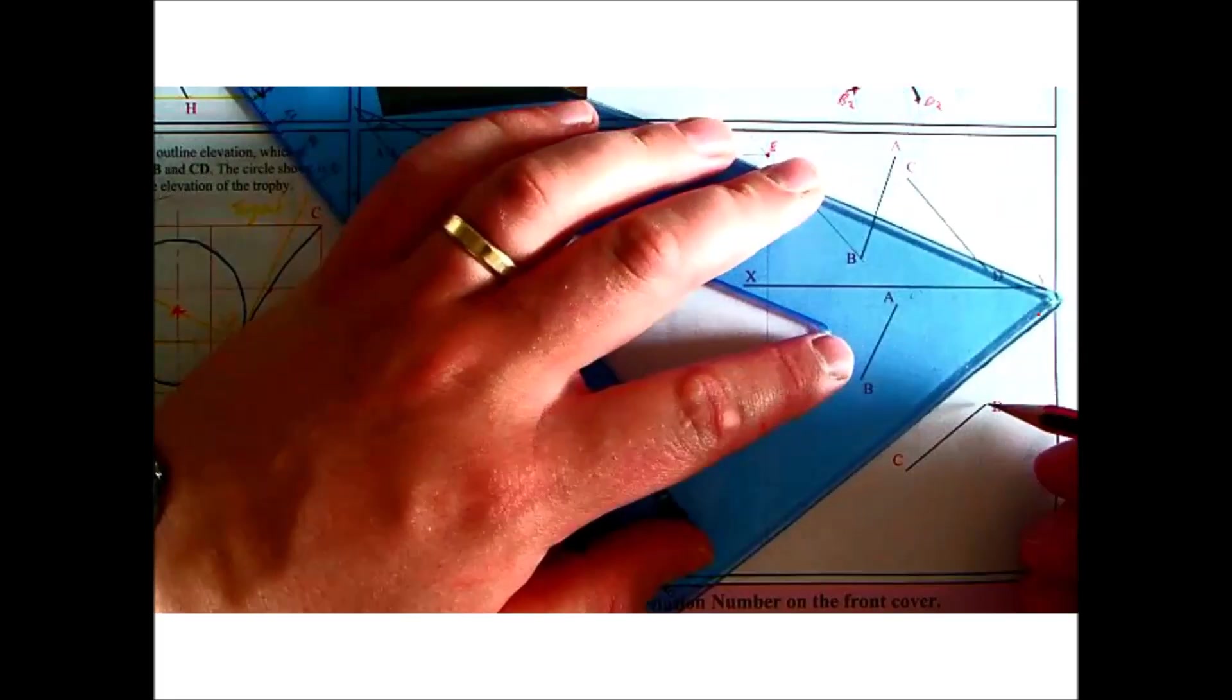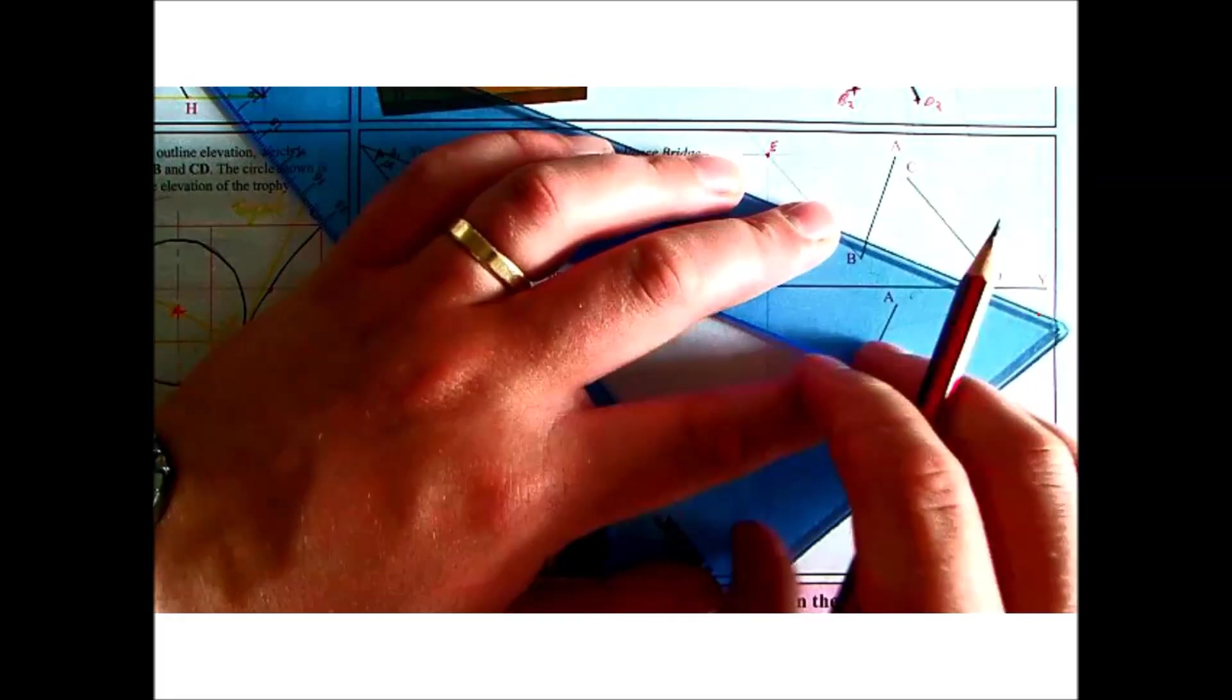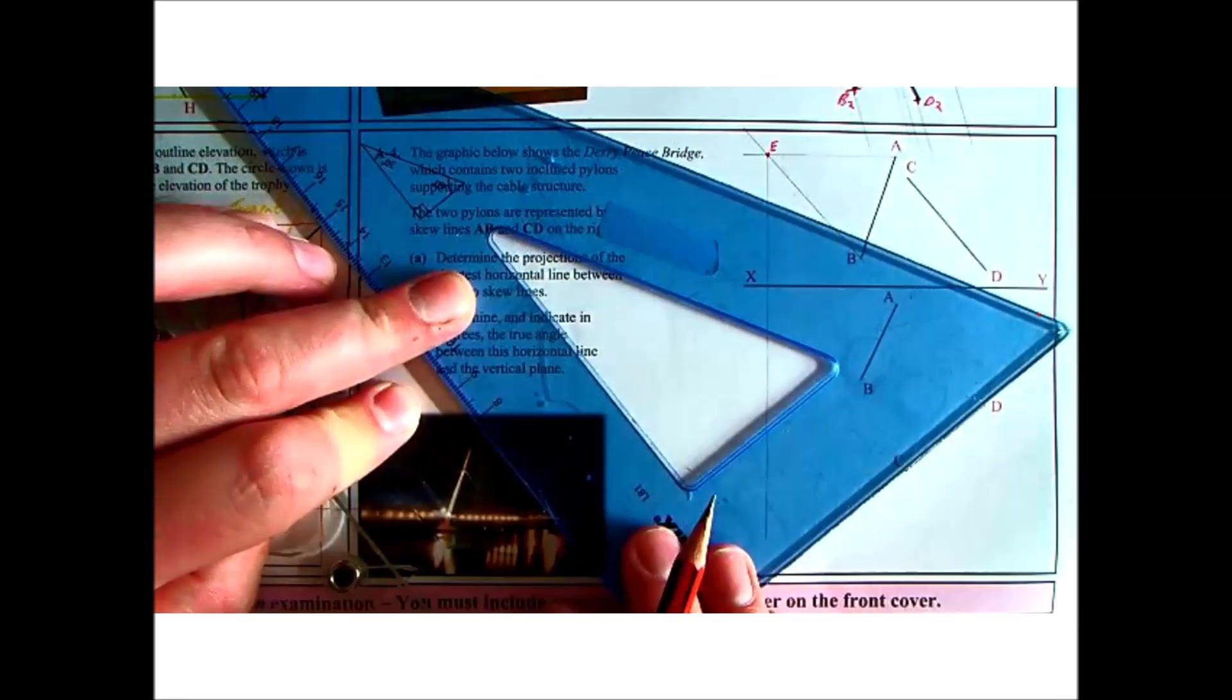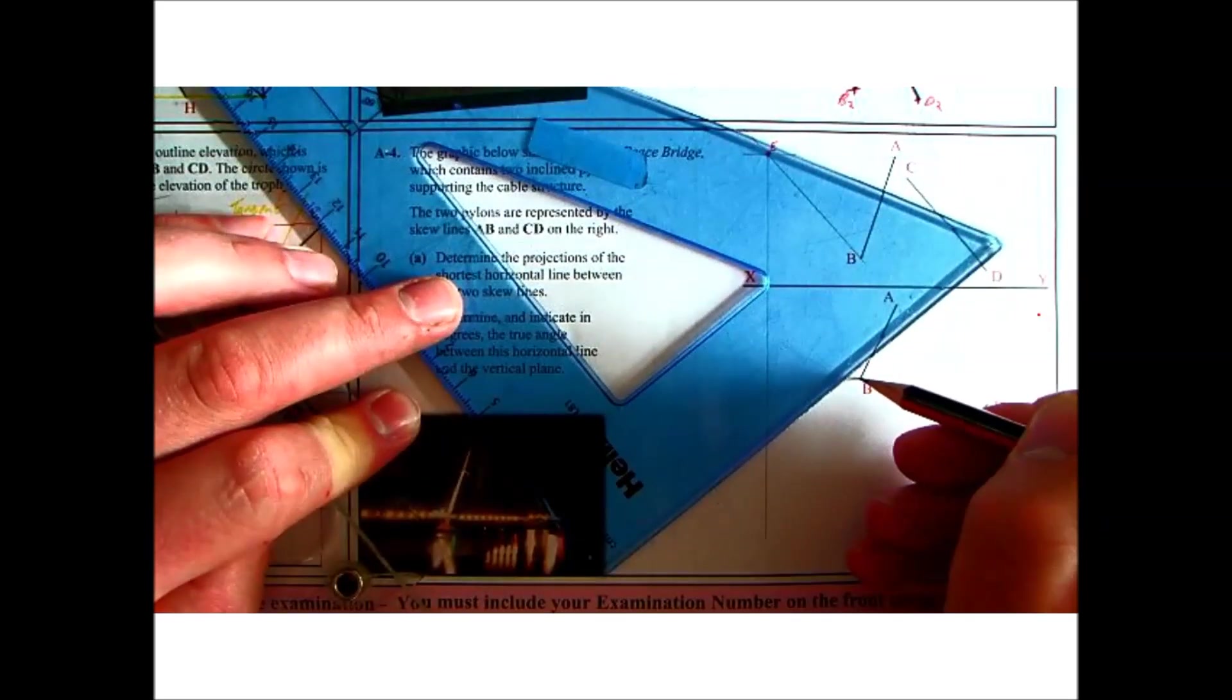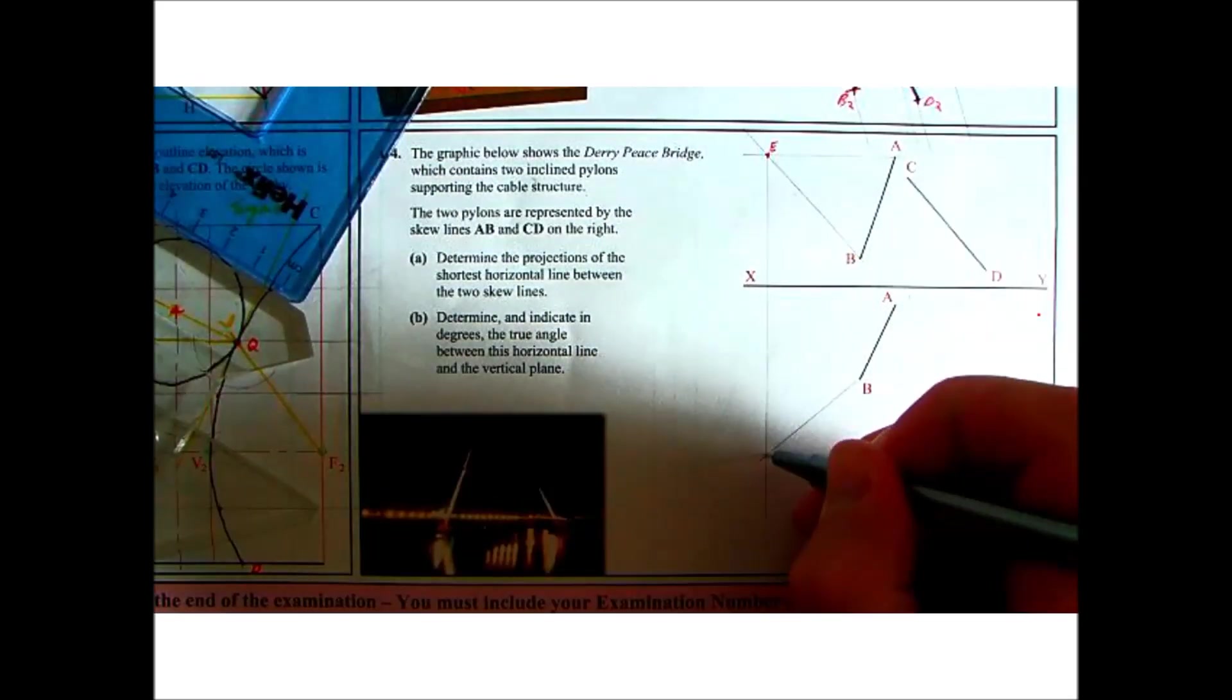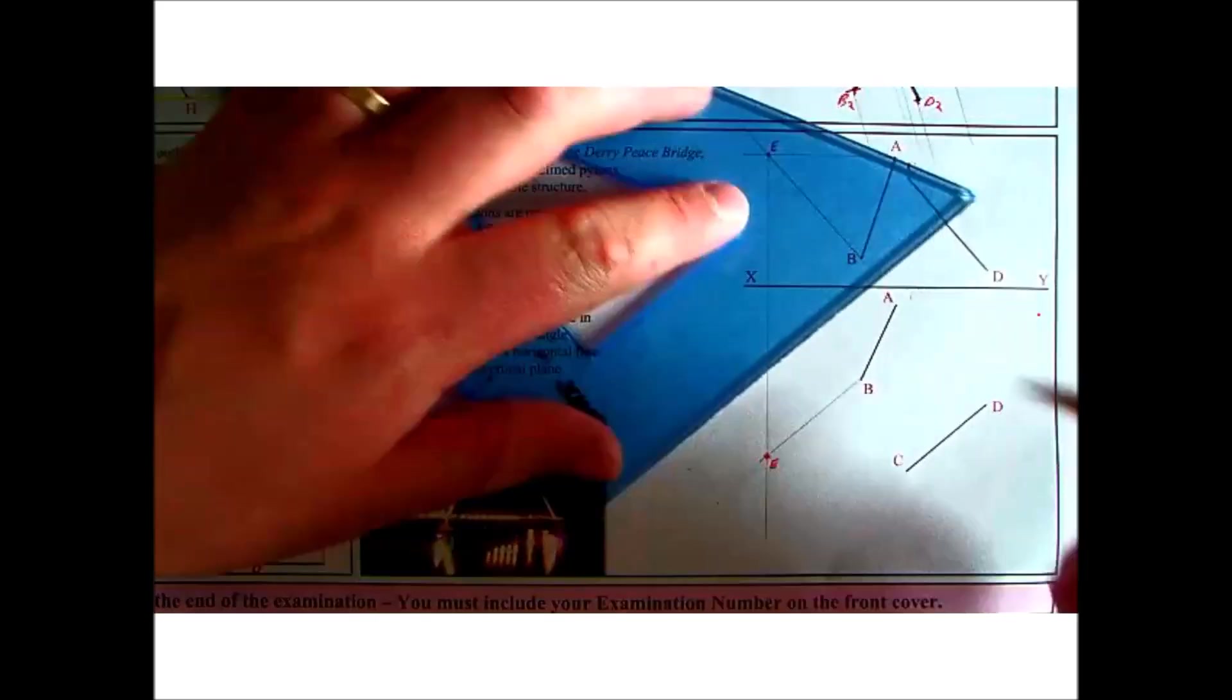So bring CD over to point B. That will give me my point E. And we'll join E back to A and that will give me a true length.